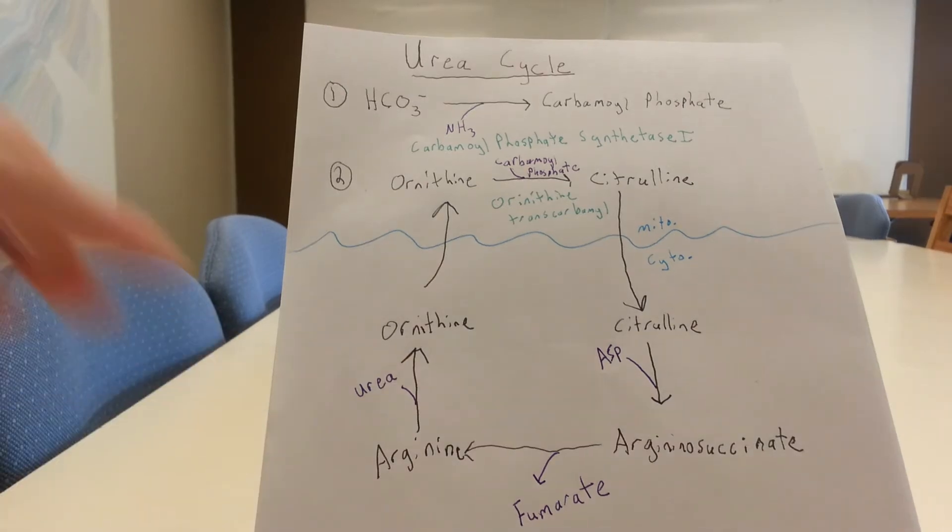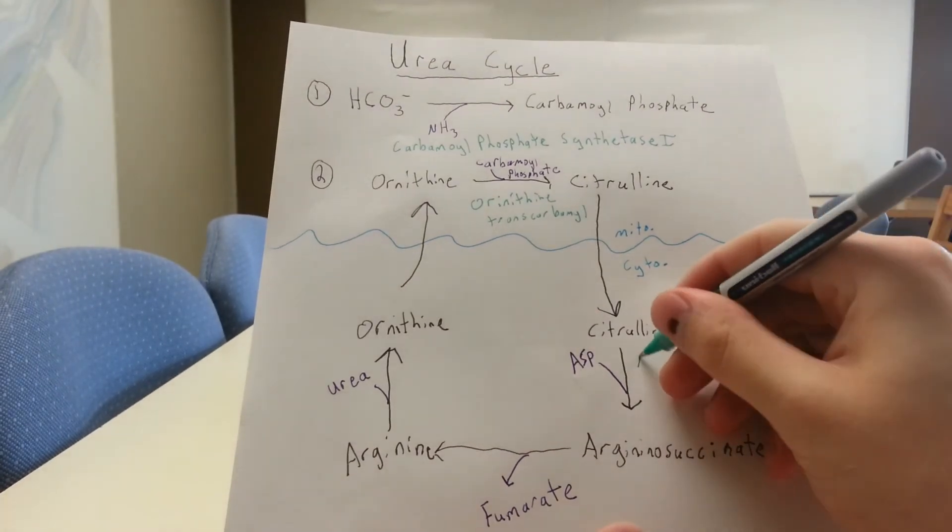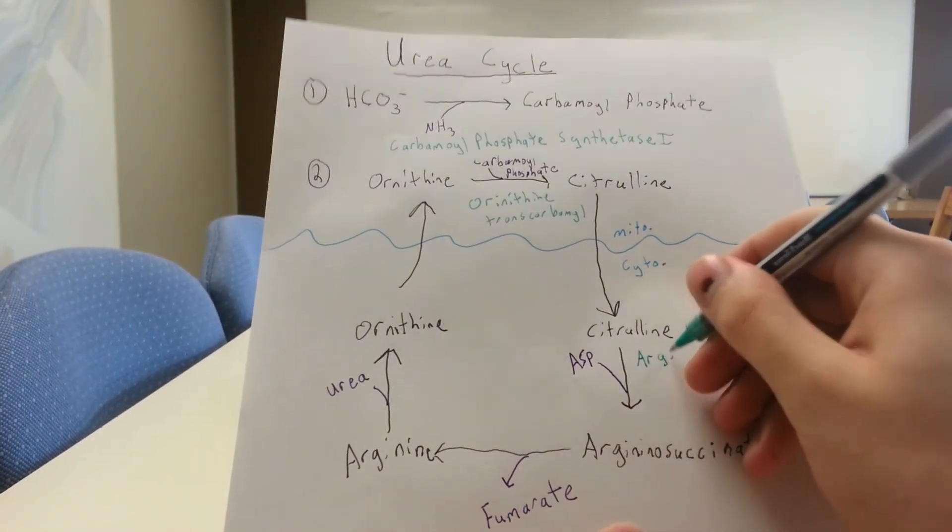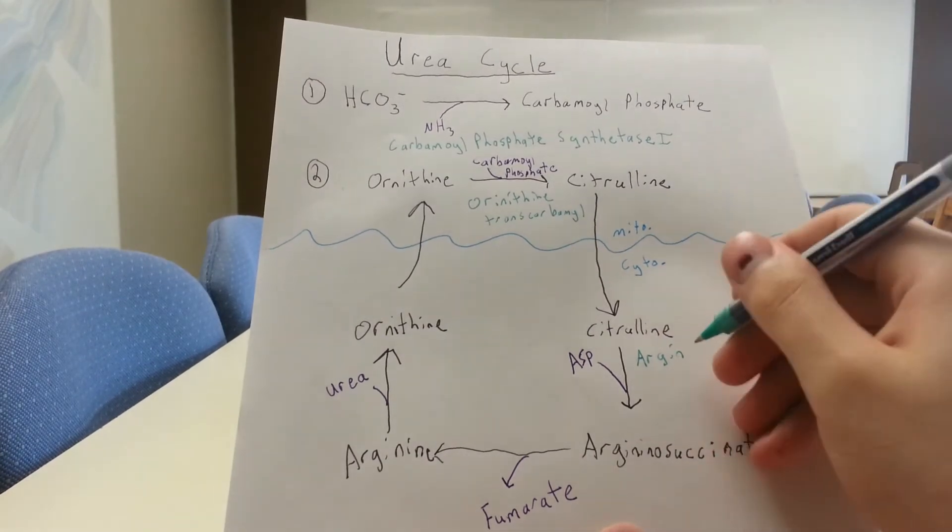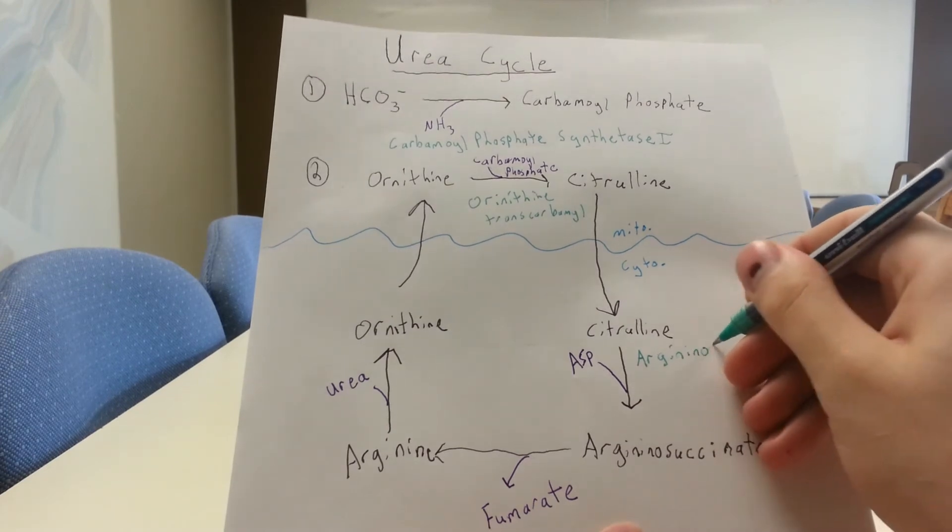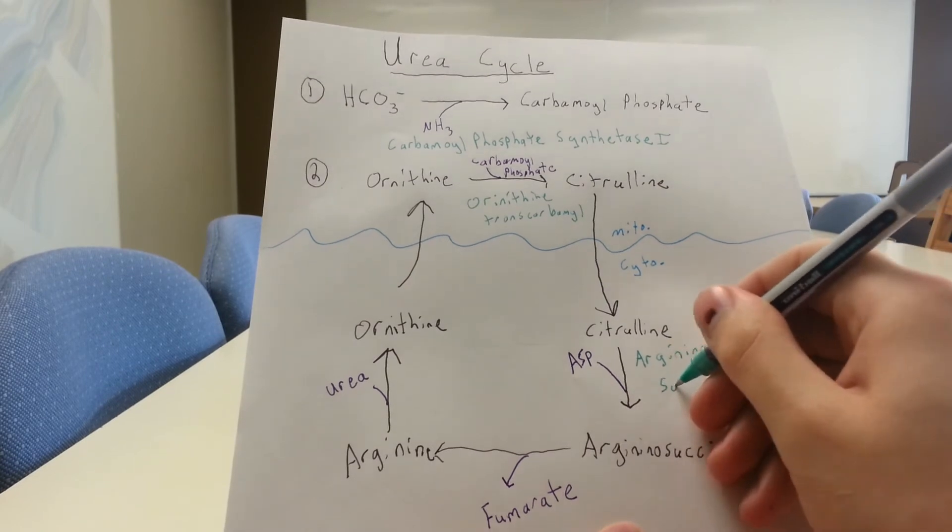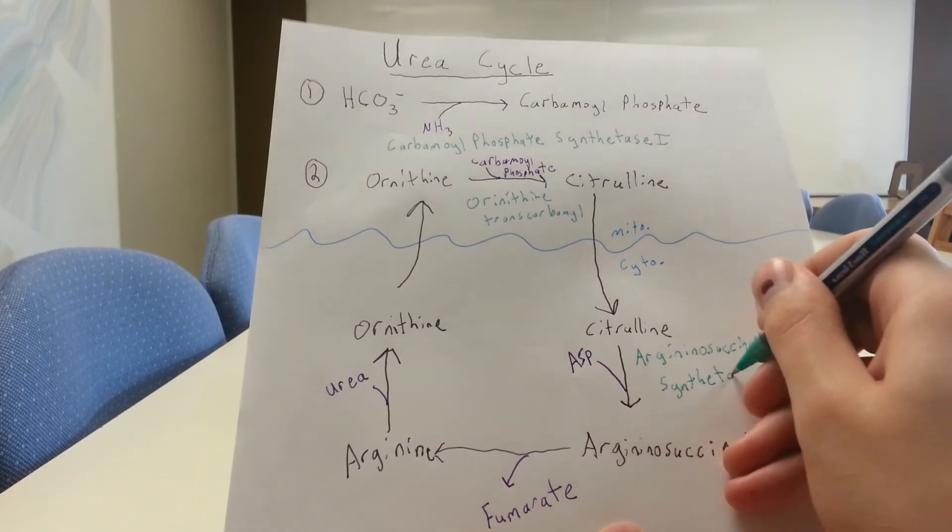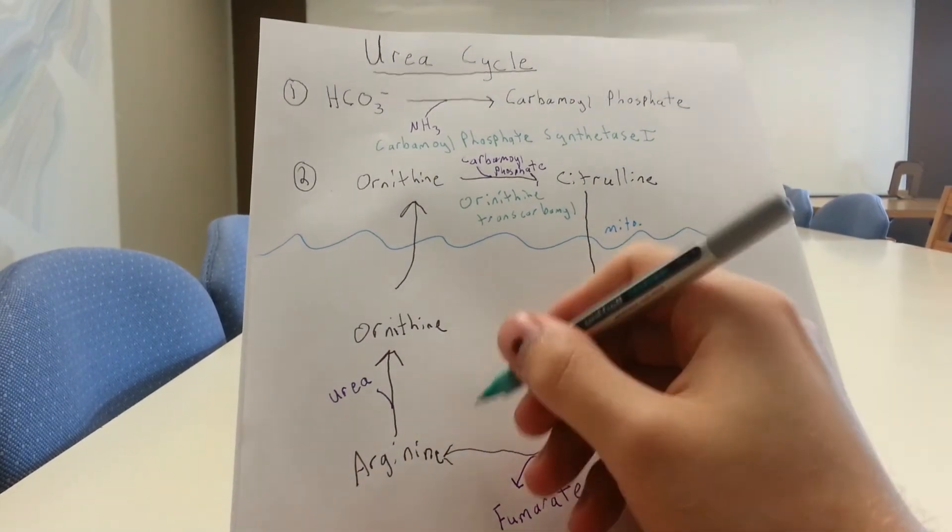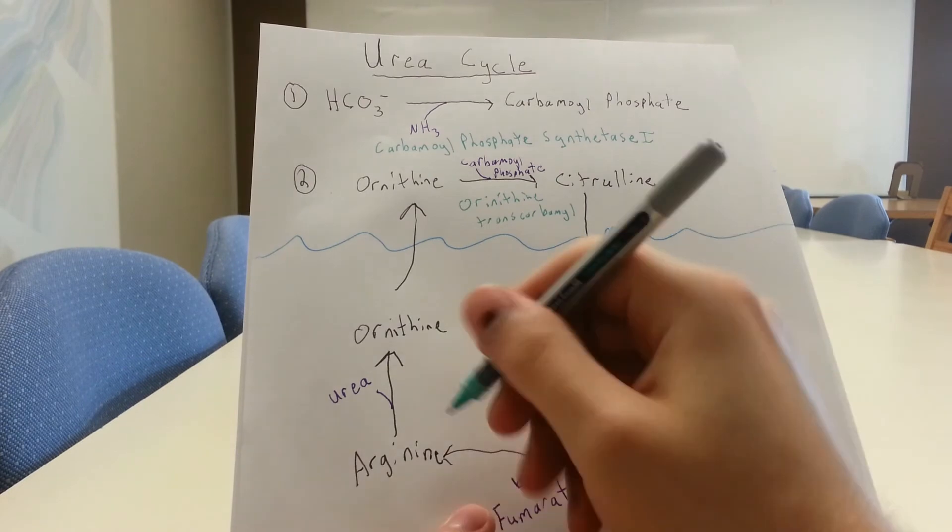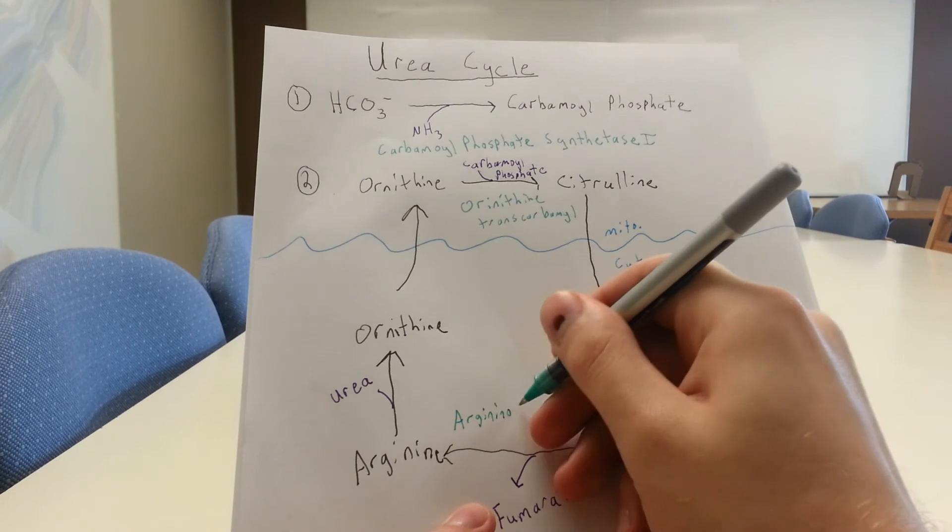Now, finally, I'll just write in the enzymes for all these steps, and they're all pretty simply named, so they're not too hard to remember. So when we're forming argininosuccinate, we've got argininosuccinate synthetase. And that's this step, and then, again, we're going from argininosuccinate to arginine, and that's cleaving off a fumarate, so it's just an argininosuccinate lyase.